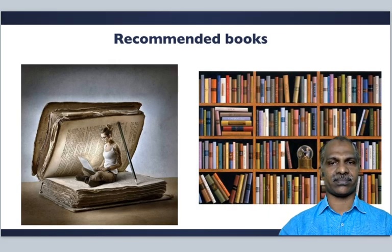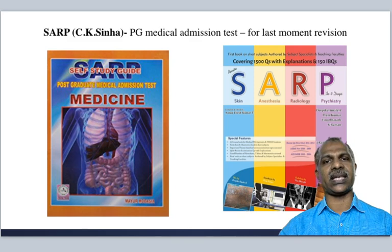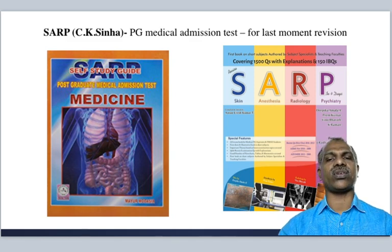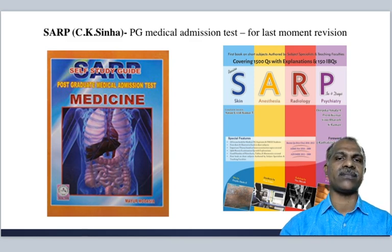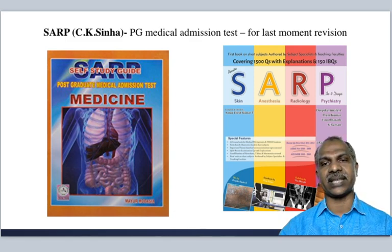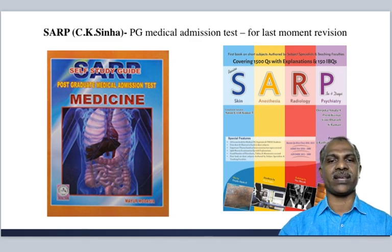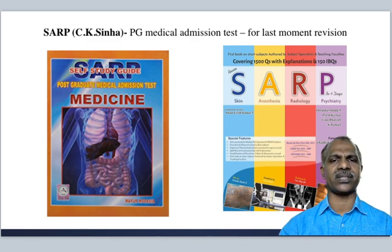Recommended books for preparation for the MOH UAE TCAM examination. First: SARP by CK Sinha — PG Medical Admission Test series. Purchase at least two books from this series: the self-study guide for postgraduate medical admission test in medicine, and the SARP book on skin, anesthesia, radiology, and psychiatry covering 1500 questions with explanations. These are unavoidable for any competency examination covering practice of medicine, and cost only 300 rupees in India.